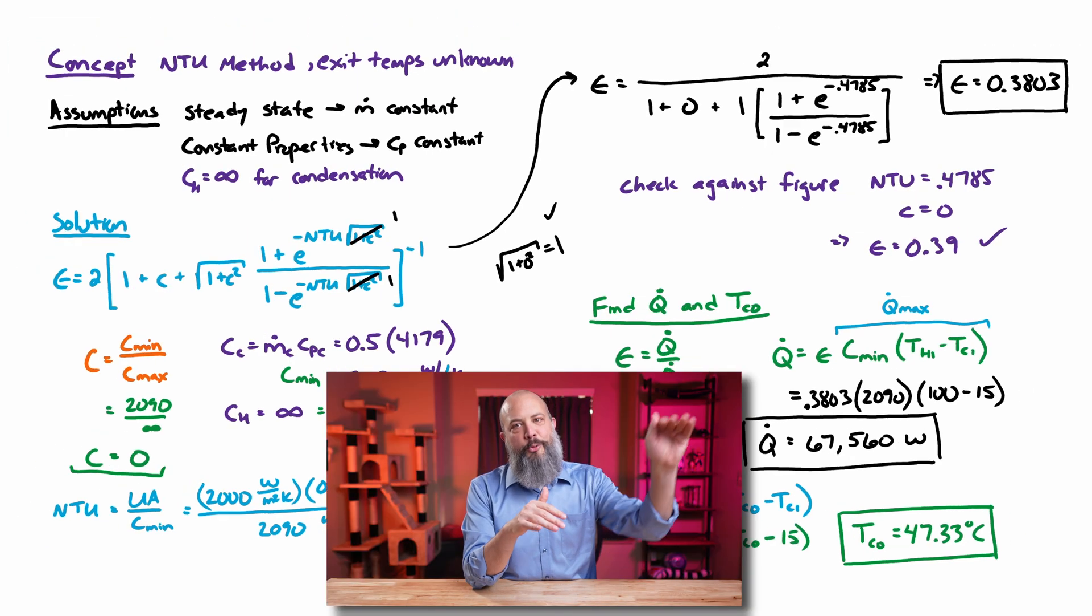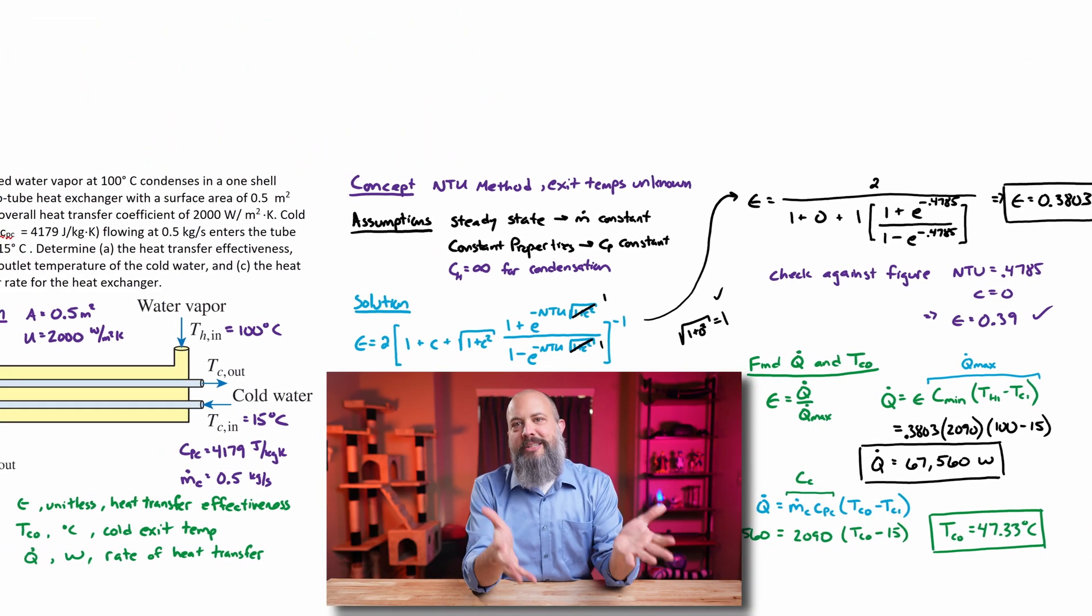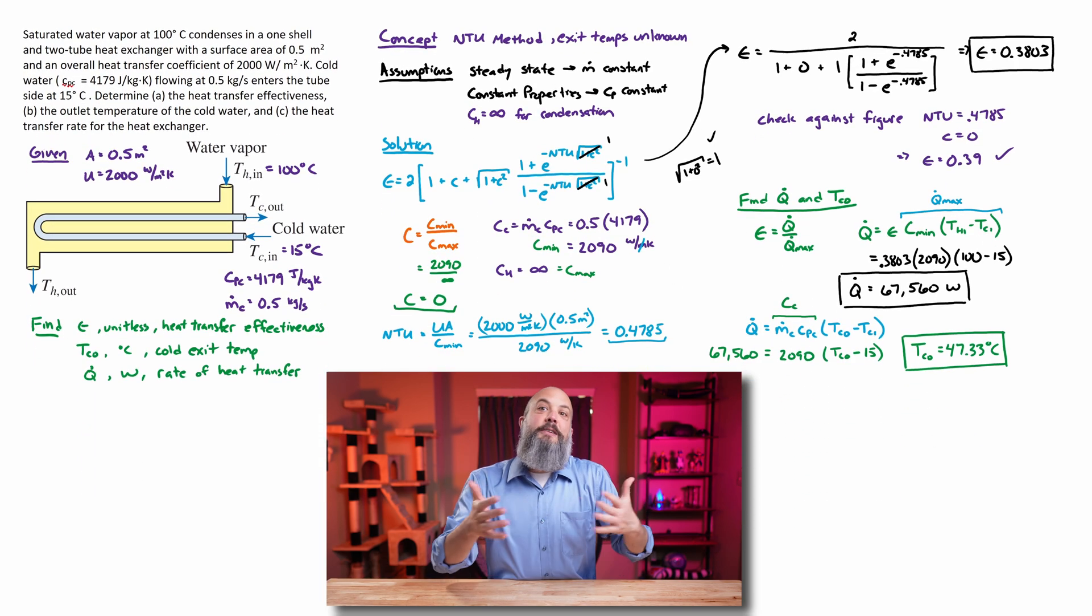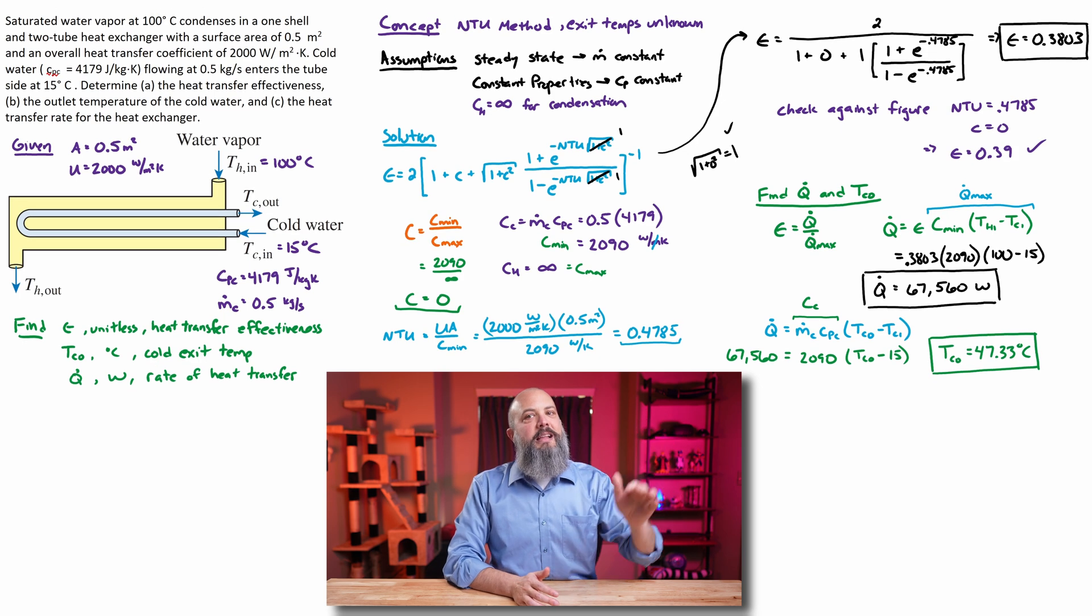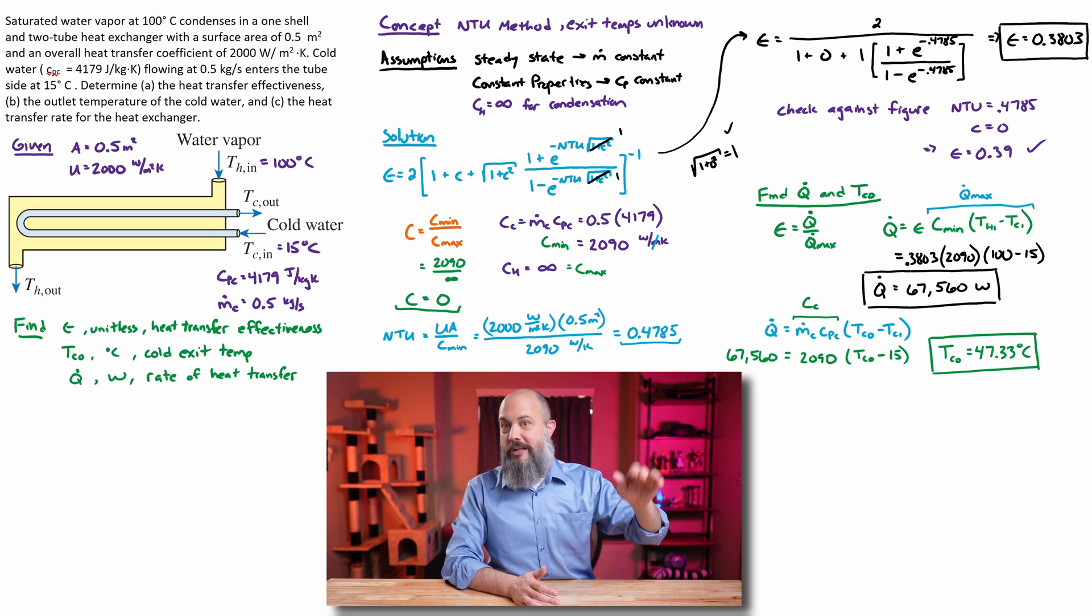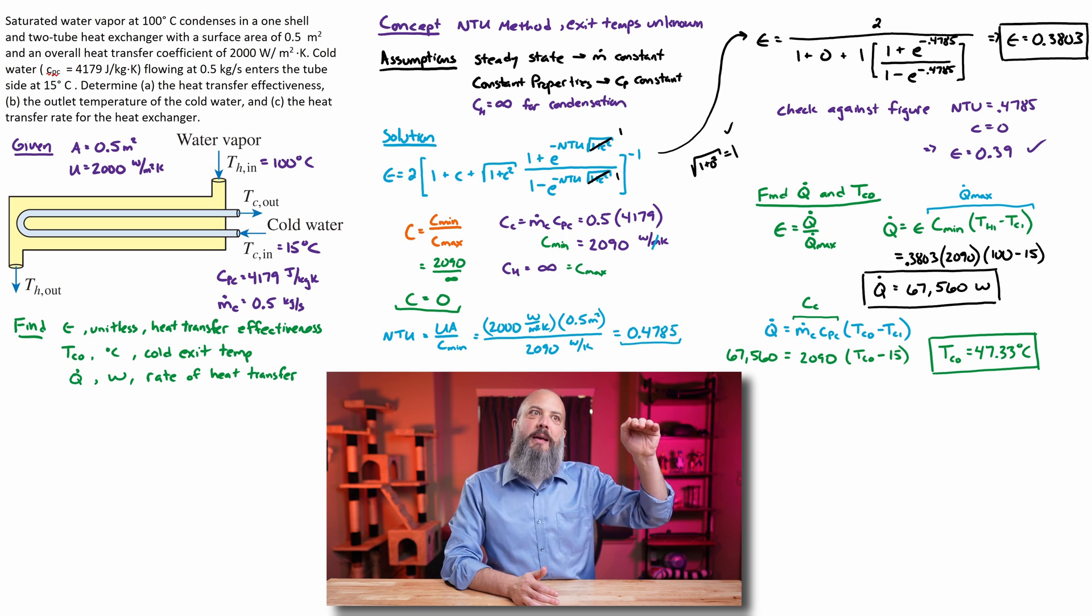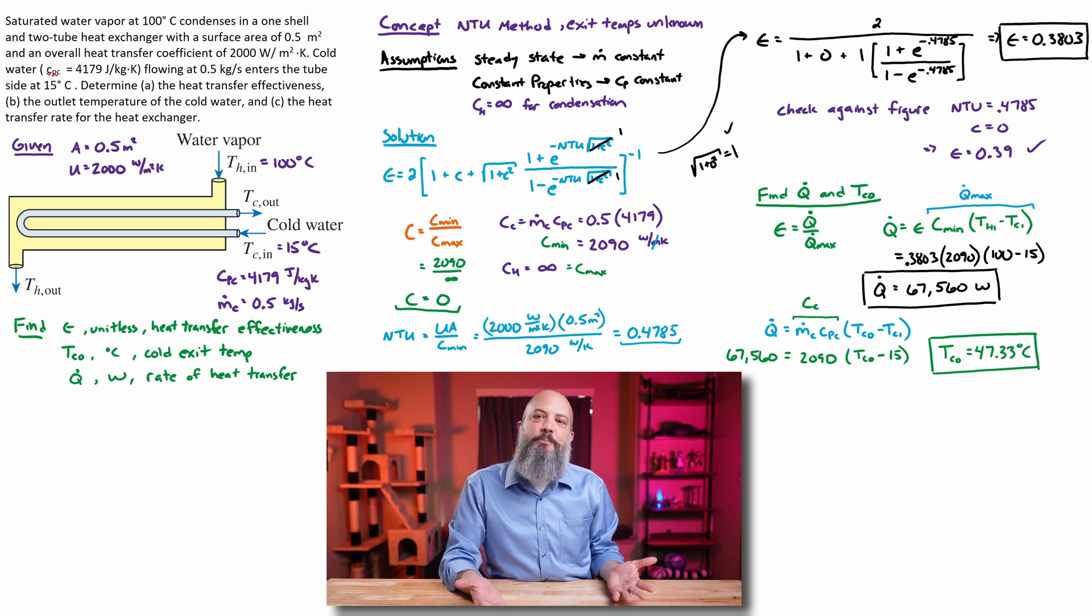Not very close to the 100 degrees, but that makes sense because the effectiveness was only 38%. If the effectiveness were more like 90%, then we might have seen an exit temperature around 90 degrees. If you're starting to understand this effectiveness NTU method but want to see another example problem to double check, I've got a cross flow heat exchanger problem linked up on the screen. Just to hear the terminology a little bit more, get a little bit more practice.